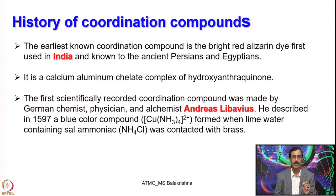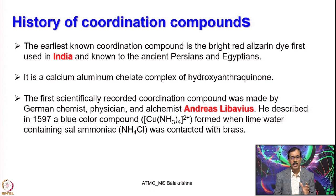What he did was describe in 1597 a blue colour compound having composition of 4 ammonia and a copper(2+) ion — now known as tetra ammonium copper — formed when lime water containing sal ammoniac, that is ammonium chloride, was contacted with brass. They observed the formation of this blue colour, essentially due to the formation of this compound. This is the first recorded copper complex or coordination complex.